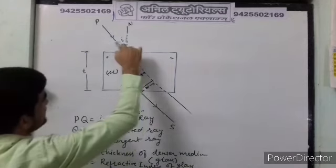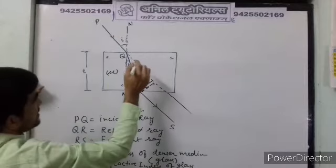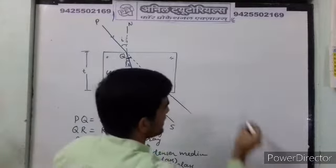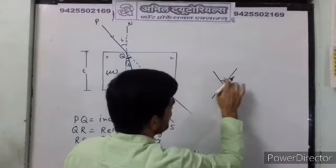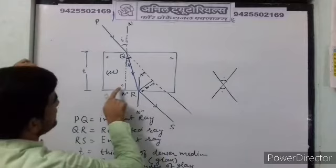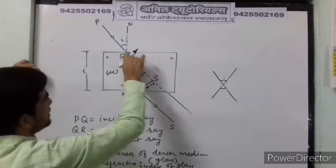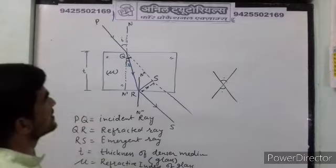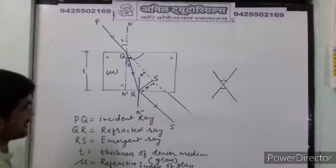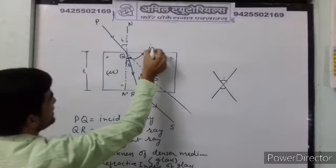This angle is R and this angle is I. The RS ray extended meets the PQ ray, and since vertical opposite angles are equal, the angle PQN' also equals I. Looking at the triangle QN'R, with the normal being perpendicular to the slab surface giving a 90-degree angle, we have angle N'QR equal to R. So the angle between the original ray direction and QR is I minus R.